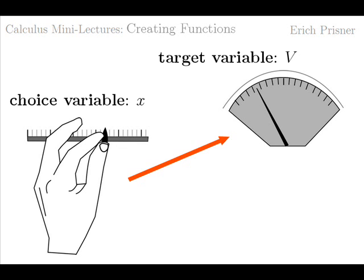In other words, after defining the target variable and the choice variable, our first task is to find out how the target variable depends on the choice variable. To express the target variable in terms of the choice variable. In our case, to express volume V in terms of base length x.